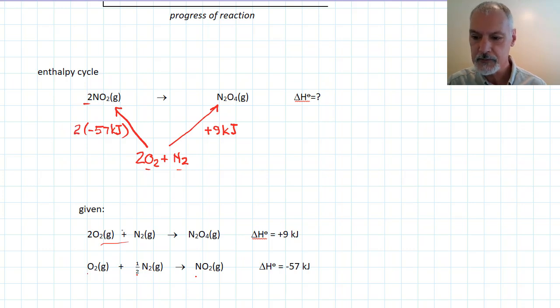So I've now presented my given information in this diagram. I want the heat for this direct path. Well, that would be the same as going down here, this way, and then going from here up to here. This would be an alternative path.